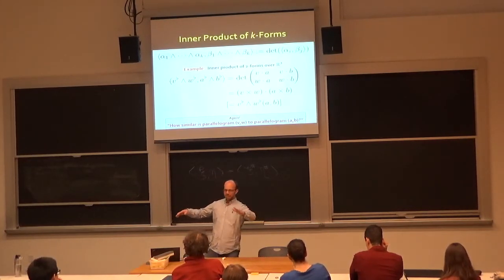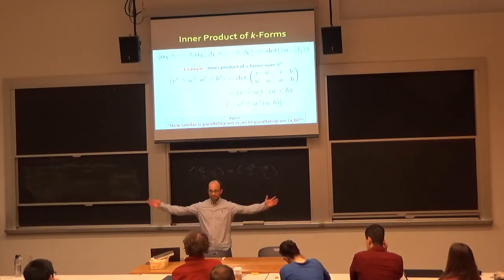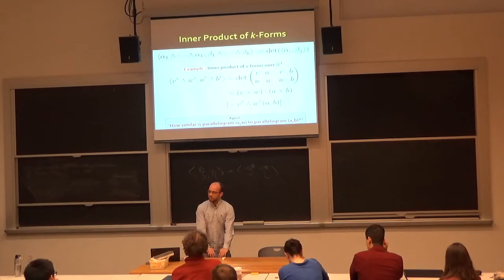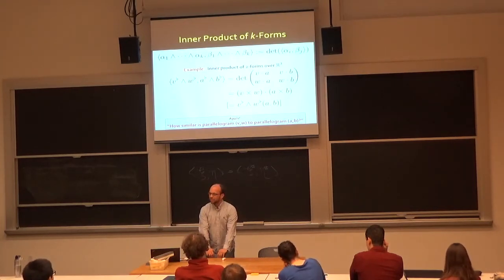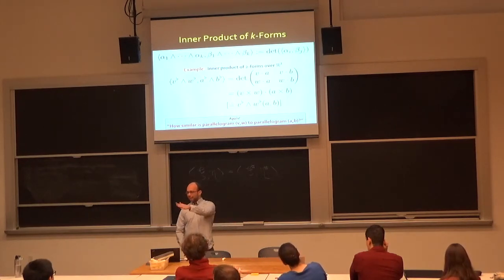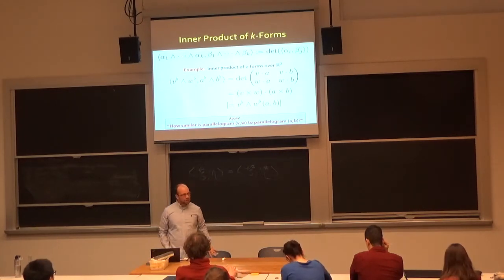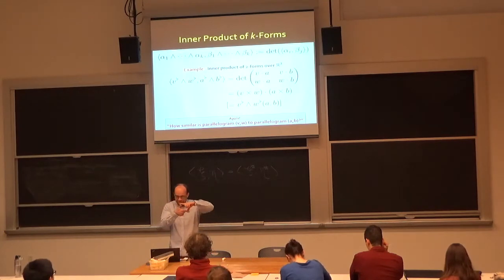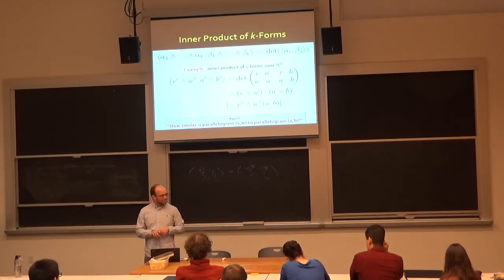For example, think of a plane through the origin in R3. A plane is two-dimensional, and three minus two is one. The duality we expect involves one-dimensional objects — specifically, the normal vector. Every plane is a two-dimensional object, but a one-dimensional normal vector completely defines it. Similarly, two-forms over R2 are like little bits of area — little squares — and you can think of that as a scalar times the area of a unit square. This duality between k-dimensional and n-k-dimensional things is what we want to capture.